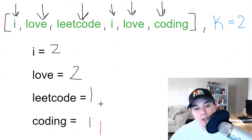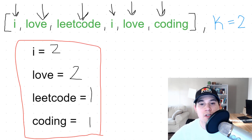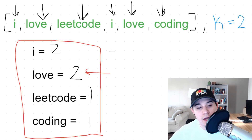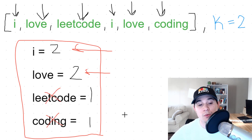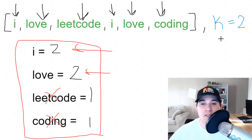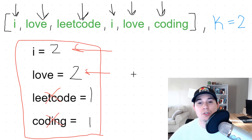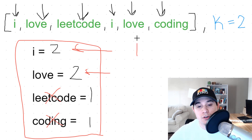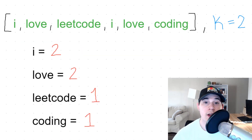So 'i' occurs two times, 'love' occurs two times, 'leetcode' and 'coding' only occur a single time. Now that we have the frequencies, 'love' and 'i' occur two times while 'leetcode' and 'coding' only occur once. Since k is two and both 'i' and 'love' have a frequency of two, we need to return them in alphabetical order. So 'i' would be returned first and then 'love' second — that's our final answer.